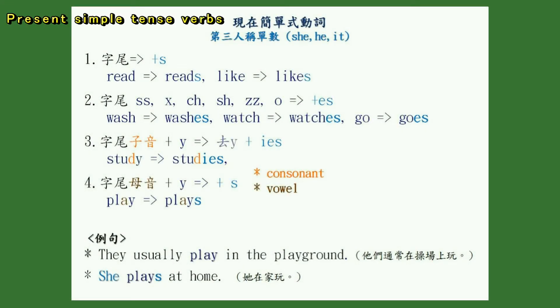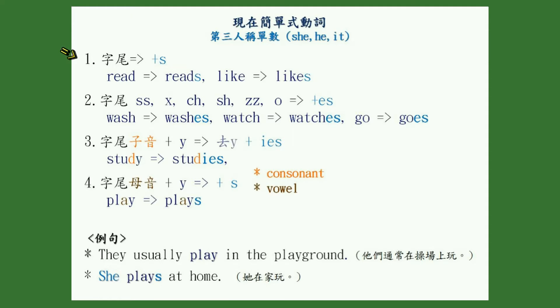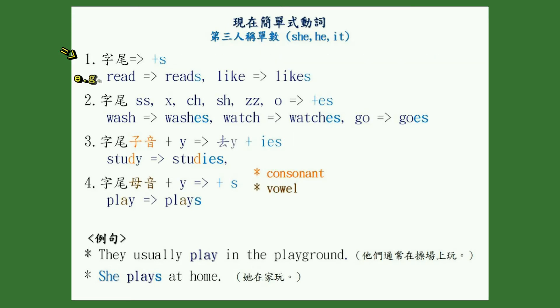Present simple tense verbs have a special form for the third-person singular: she, he, it. To make that form, we usually add an S to the end of the verb. Examples: read, reads; like, likes.